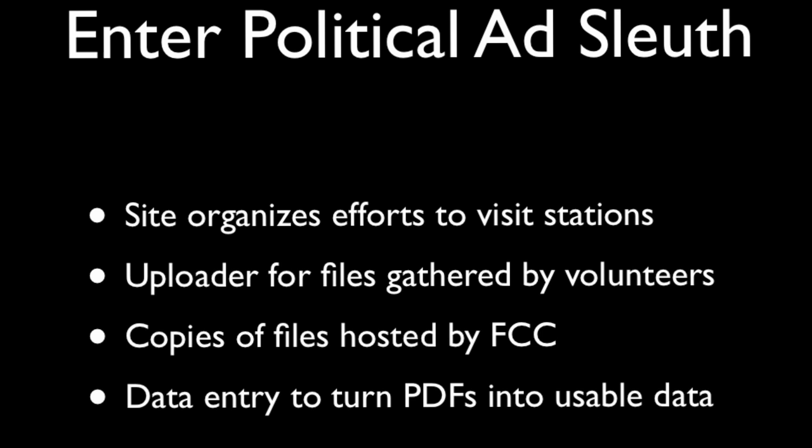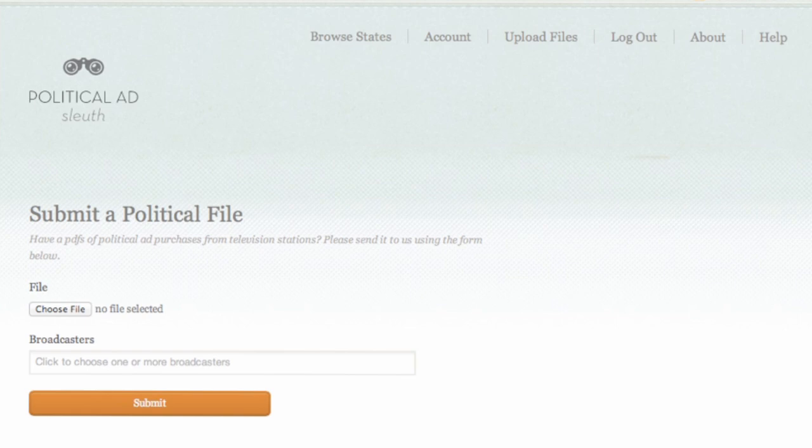Political Ad Sleuth is designed to do several things. It organizes efforts to visit stations not covered by this rule, so volunteers can pull these files, scan them, and upload them. The upload function of the site allows volunteers to put those files online. It also copies the files that are hosted by the FCC, so all of the stations that are covered, Political Ad Sleuth has their files as well. And we have a data entry system so we can, through volunteer efforts, turn those PDFs into actual usable data.